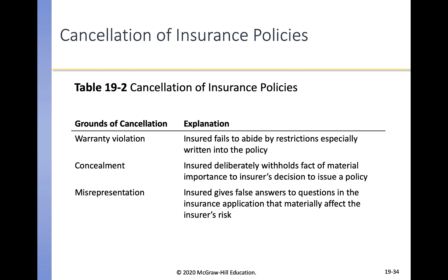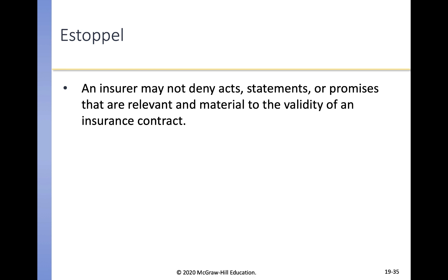An insurance policy may be canceled for the following reasons: first, a warranty violation when the insured fails to abide by restrictions written into the policy; second, concealment if the insured deliberately withholds material facts relevant to the insurer's decision to issue a policy; and third, misrepresentation if the insured gives false answers in the application that materially affect the insurer's risk. The concept of estoppel means an insurer may not deny acts, statements, or promises relevant to the validity of an insurance contract — when an insurer has granted a special dispensation, it cannot deny that dispensation when a chance to cancel arises. This is a protection of the insured.